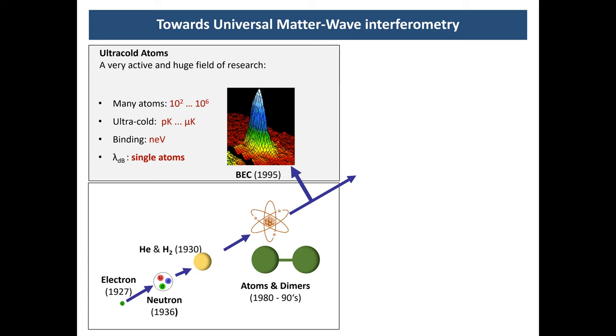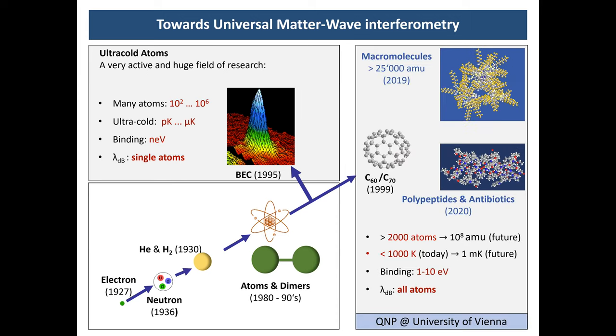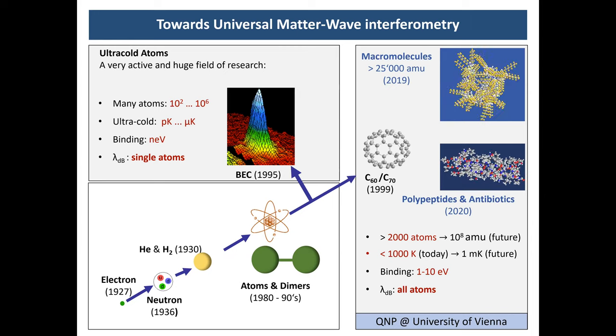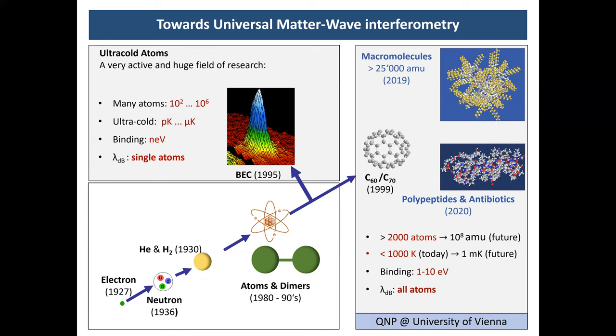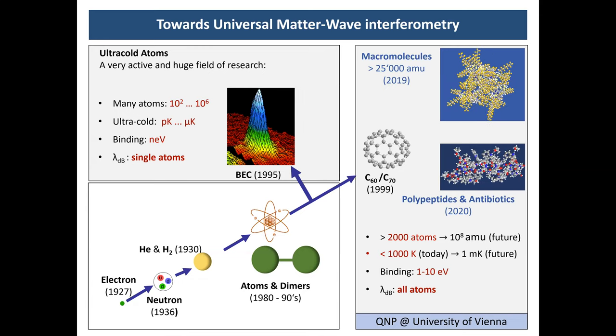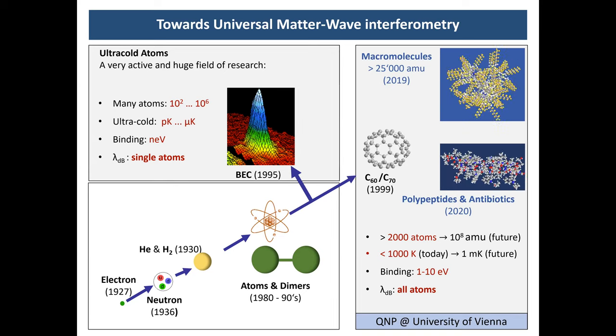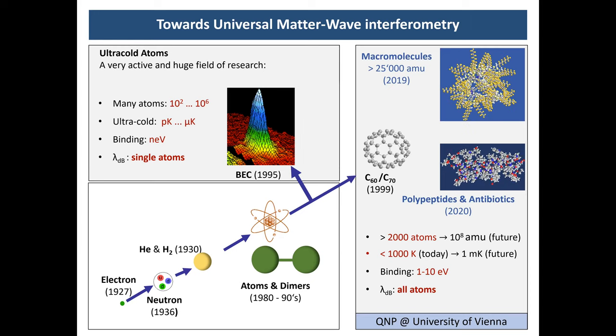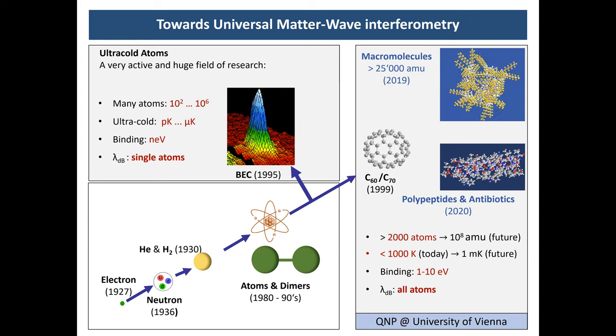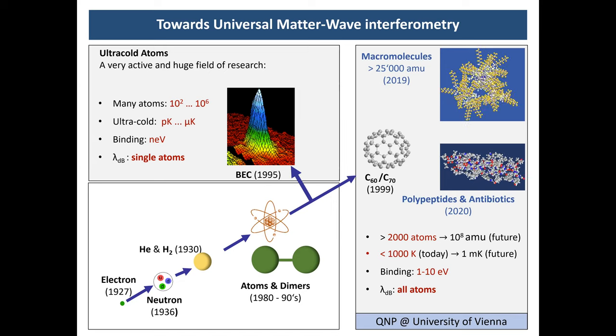And what we're interested in, and what the rest of the talk will be about, is the extreme opposite regime. We're interested in macromolecules, nanoparticles, which are extremely strongly bound, or extremely chemically bound, with binding energies on the scale of electron volts, but also including atom numbers from a few tens, like in the fullerene, here 60, up to thousands in ongoing experiments, up to millions in experiments that we are setting up these days.